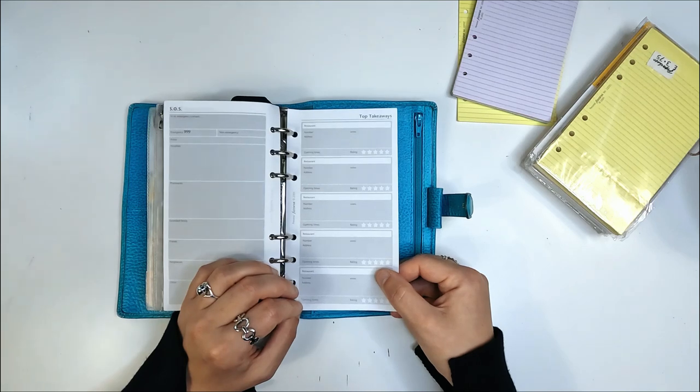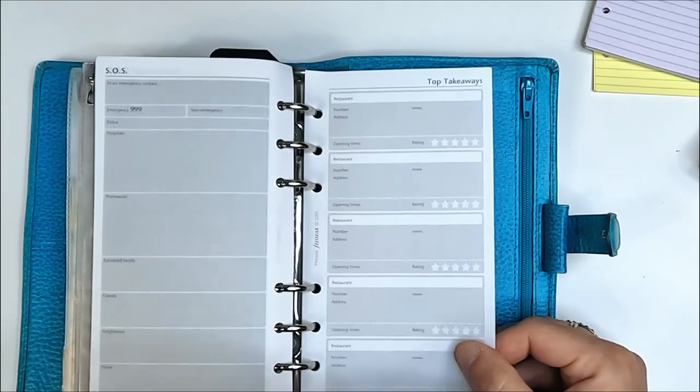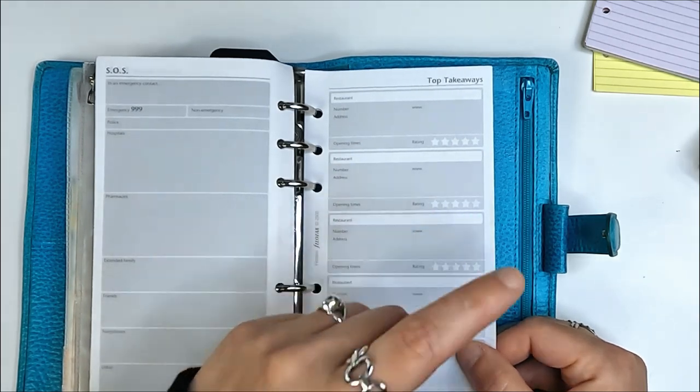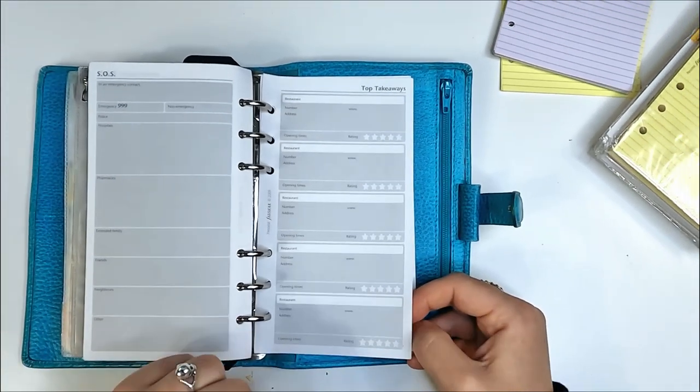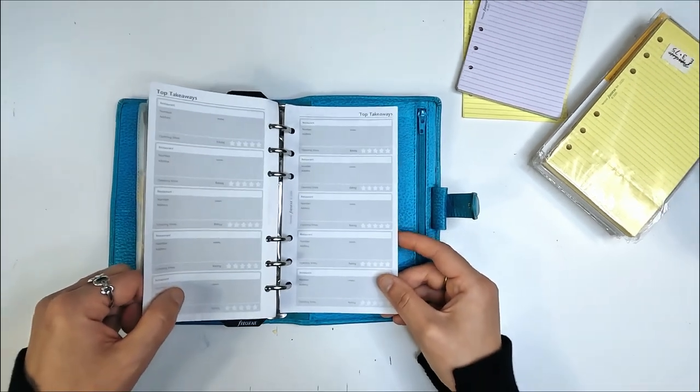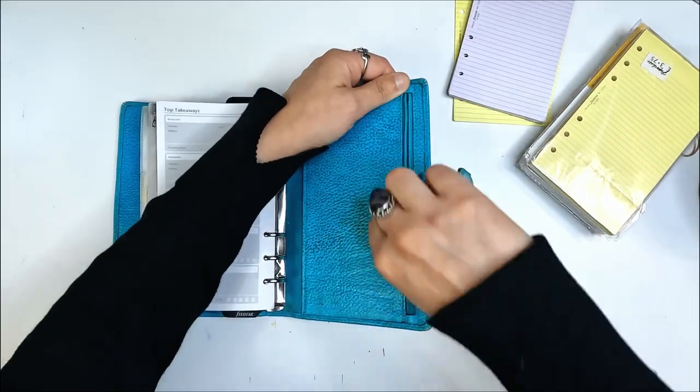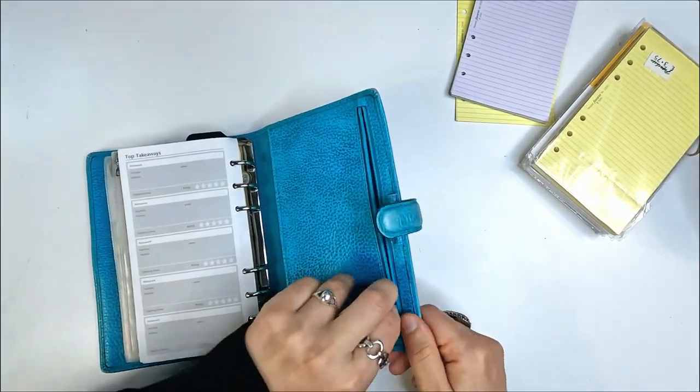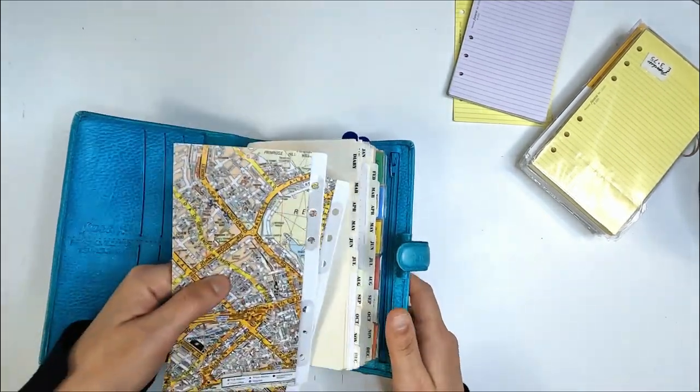Top takeaways. Okay, I have not seen this insert before. This is quite funny. So we've got the restaurant name, their phone number and address and their opening times, and the rating that you give them. It's a shame there's no space for your favorite dish, but that's quite funny. And then there's the zippy pocket at the back which is empty, and the little slip pocket at the front is also empty.